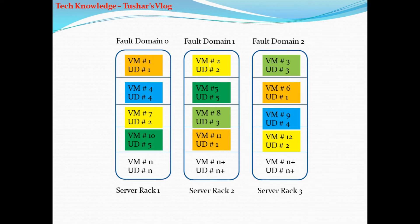If Microsoft is performing an update on update domain one, we still have other instances running on the other server racks, so our application continues to work fine. In the worst case scenario, one server rack is down and at the same time Microsoft is performing updates on update domain one — all those machines are gone and that rack is gone — but still my application continues to work. So in this case I am protected from any hardware failure and also protected from any sort of updates or operating system issues.